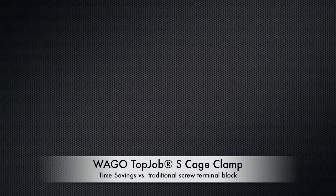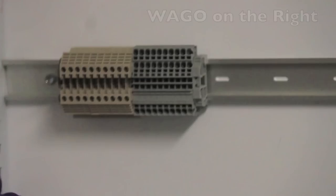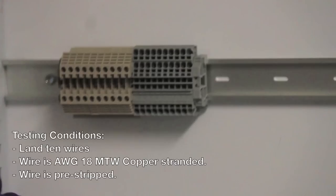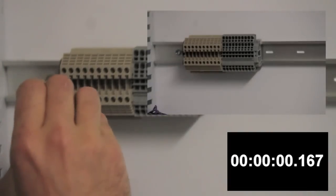I'm going to be testing the time savings of the cage clamp versus a traditional screw block. On the right we have 10 TopJob S blocks and on the left we have 10 standard screw blocks. I'm just going to be landing some 18 gauge wire in this test.